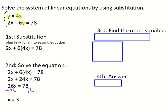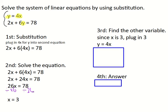From here, I need to find the other variable. I figured out what x is. I need to figure out what y is. So what I'm going to do, since I know x is 3, I'm going to plug in 3 for x. So I'm going to use y equals 4x, plug in 3. So y equals 4 times 3, and I get y equals 12.